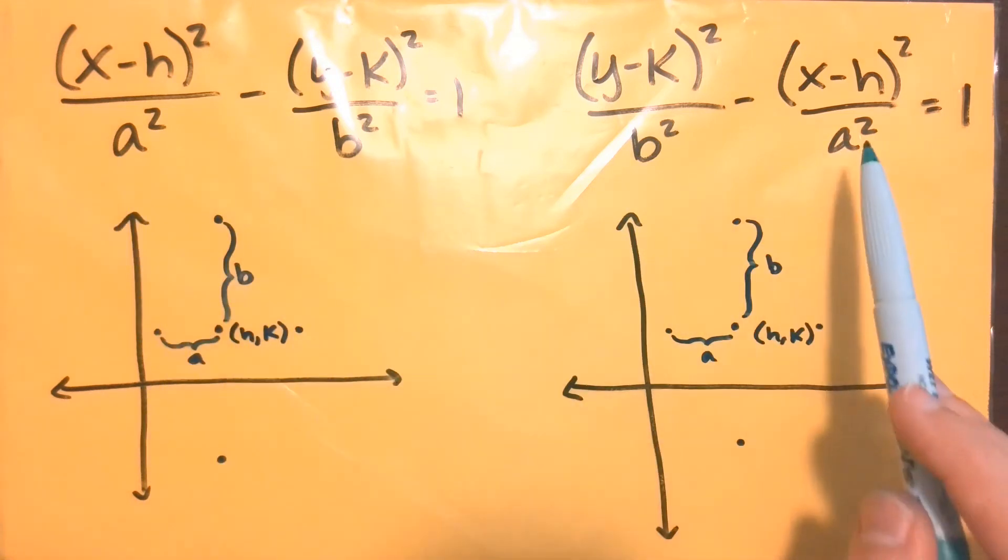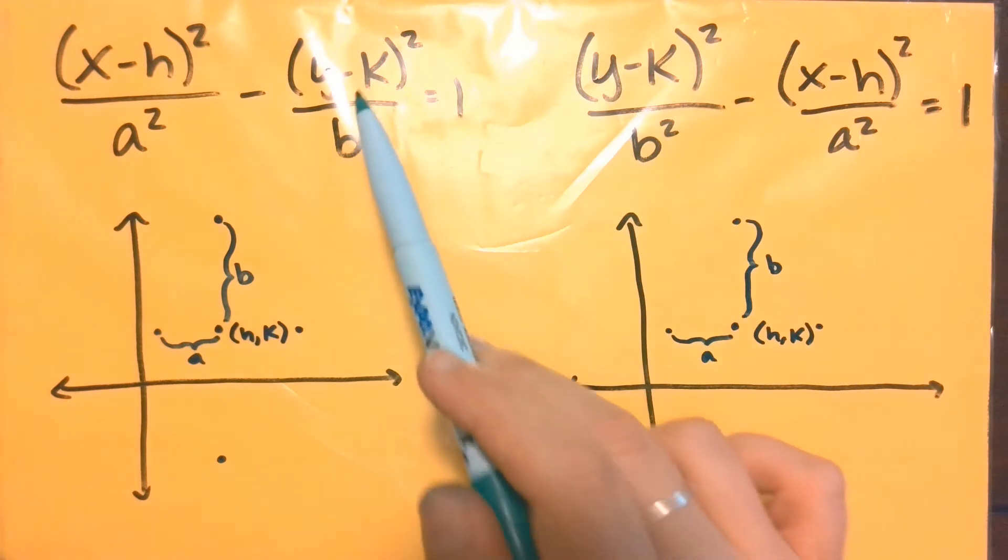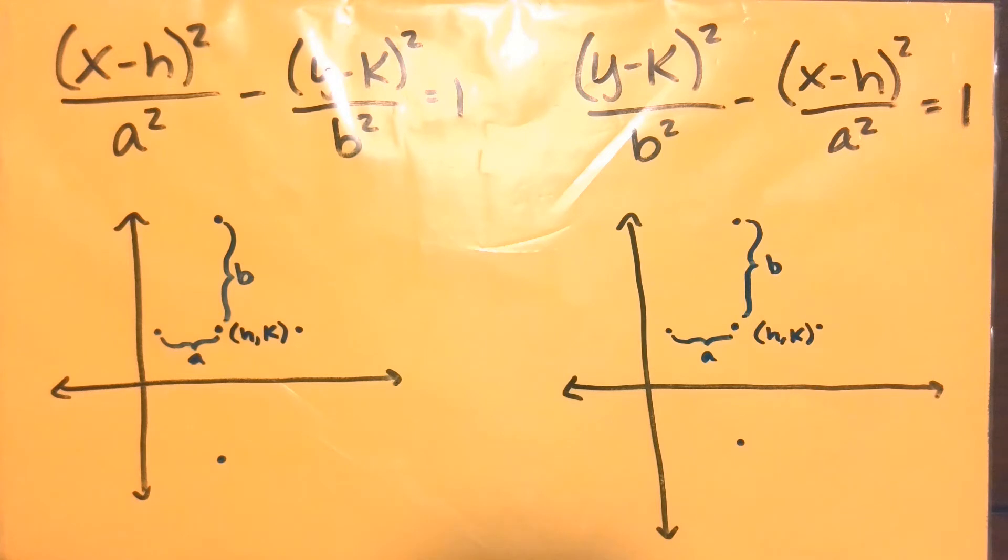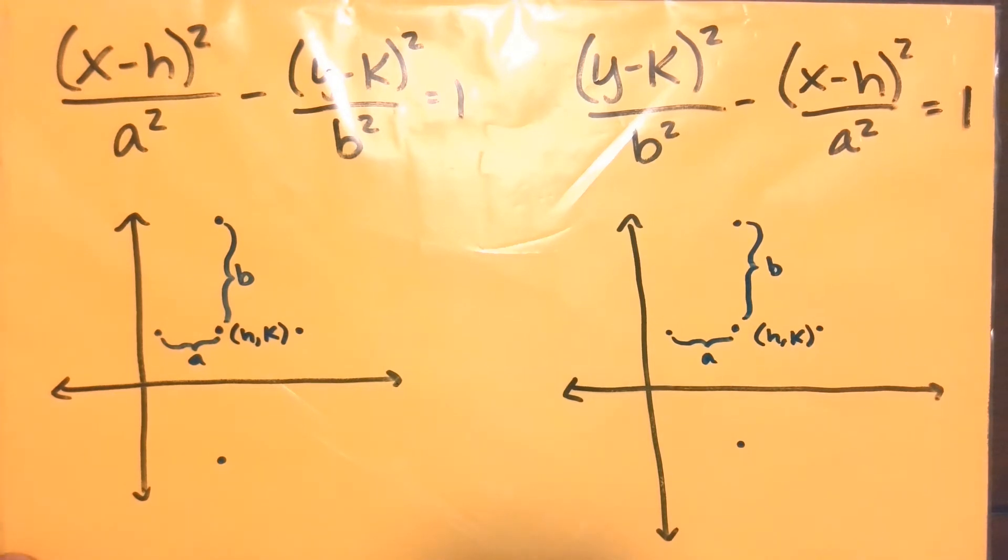The a or whatever is underneath the x is still going to control your left and right from the center. Whatever is underneath the y, taking the square root, b is going to control your up and down. So this is generic, but I went ahead and made them the same a and b so you can see nothing is going to be different there with your center and then moving up, down, left, right.